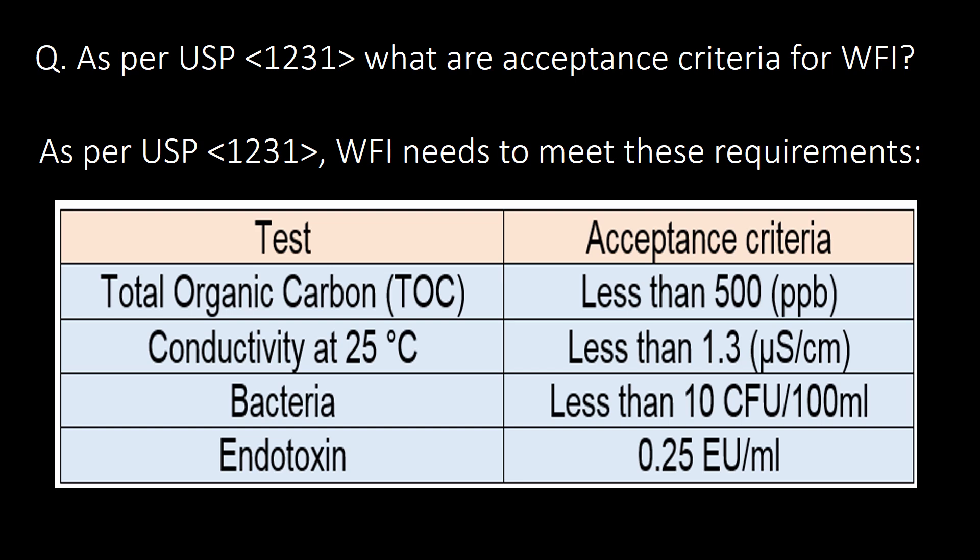First test is TOC, that is total organic carbon testing; acceptance criteria is less than 500 ppb. Second test is conductivity at 25 degrees Celsius; acceptance criteria is less than 1.3 micro siemens per centimeter. Third test is bacteria; acceptance criteria is less than 10 CFU per 100 ml, where CFU stands for colony forming units. Fourth important test is for endotoxin; acceptance criteria is 0.25 EU per ml, where EU stands for endotoxin units.